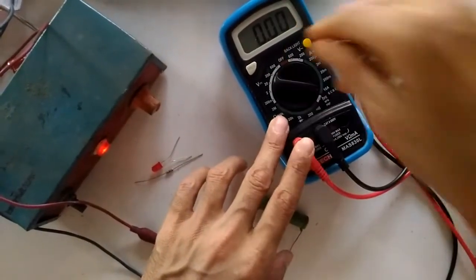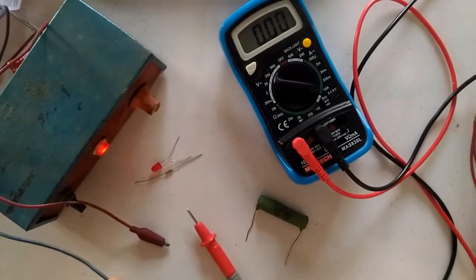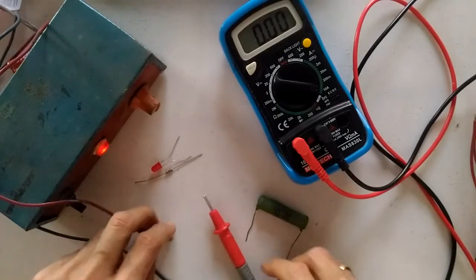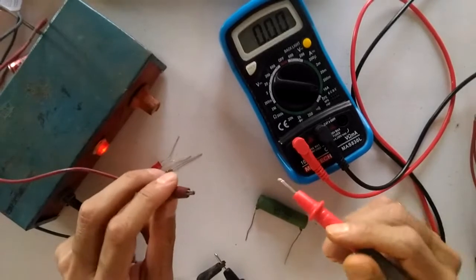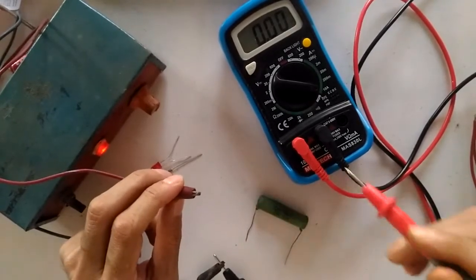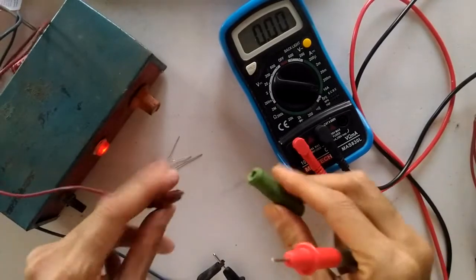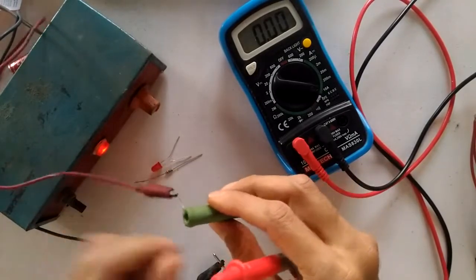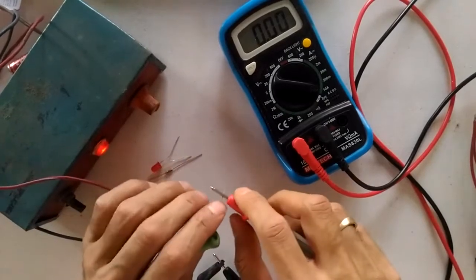Then connect the negative to the negative side. In case of measuring current, the meter is in series, so the current flows through the meter and then it shows. Now I'm going to connect this resistor over here, and this side over here, and you should be able to see some current flowing.